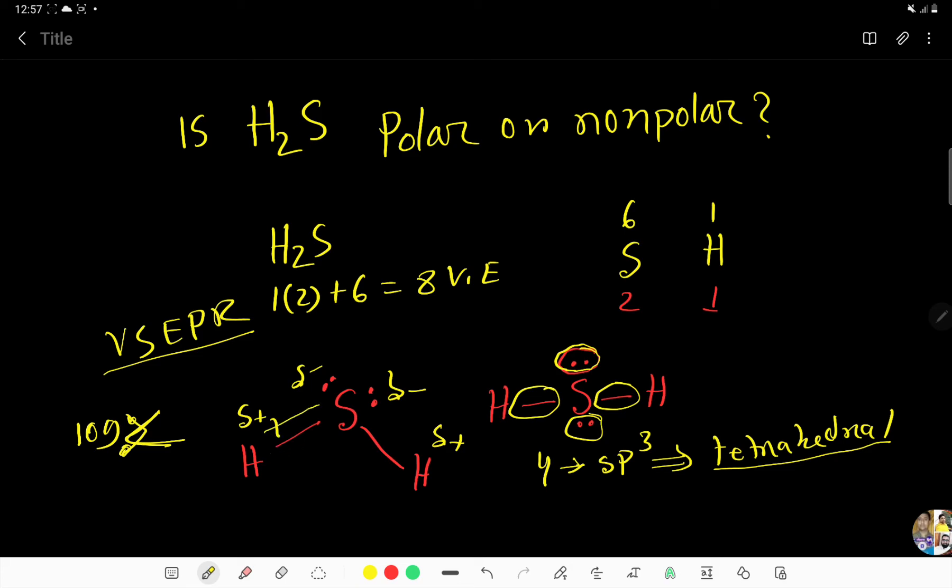So, every bond in hydrogen sulfide is polar because we are getting two poles for every bond. So, every bond is polar means, every bond will have a bond dipole moment.